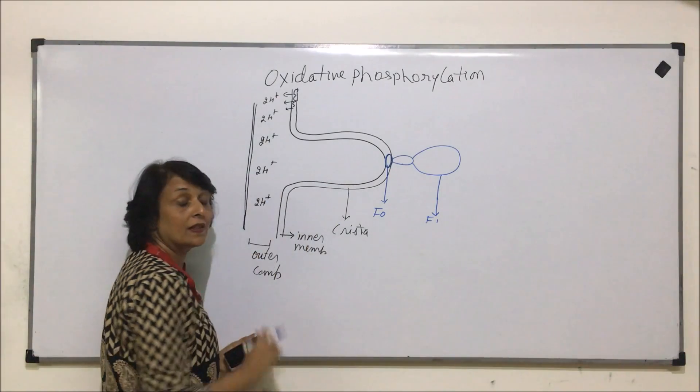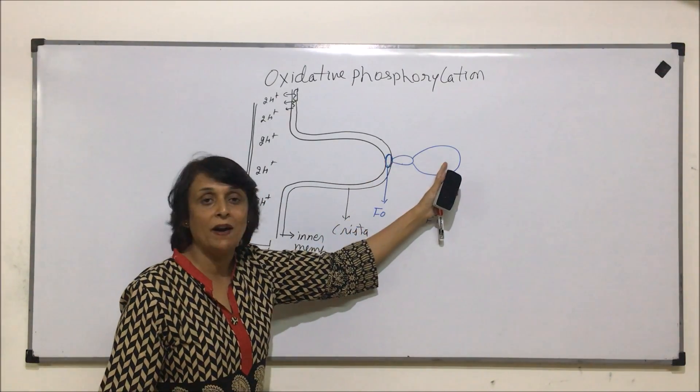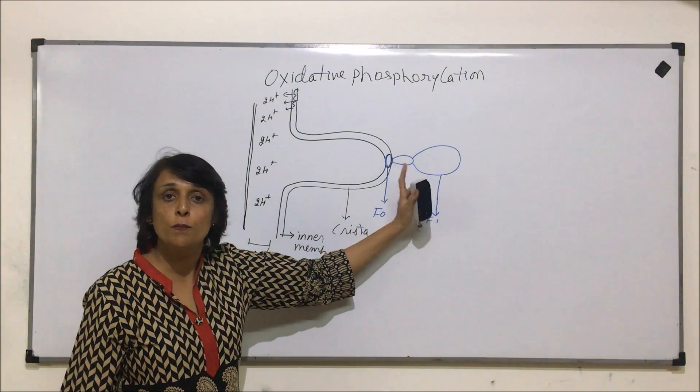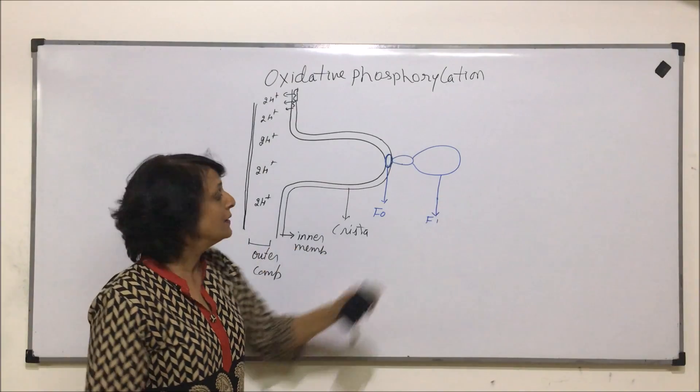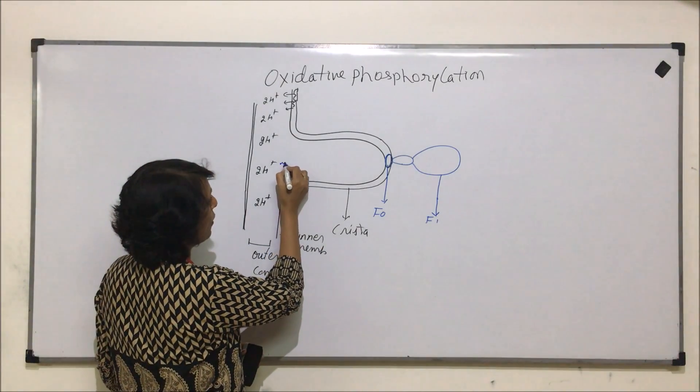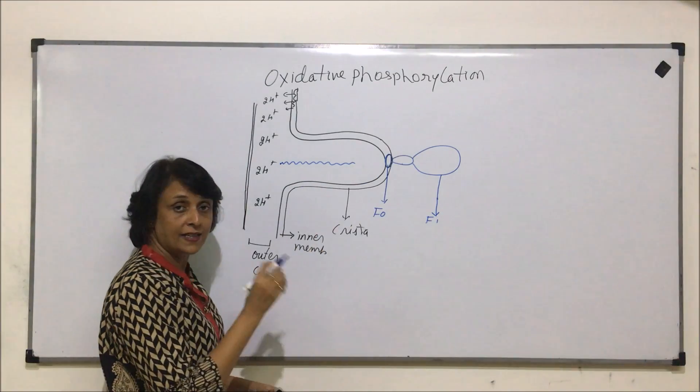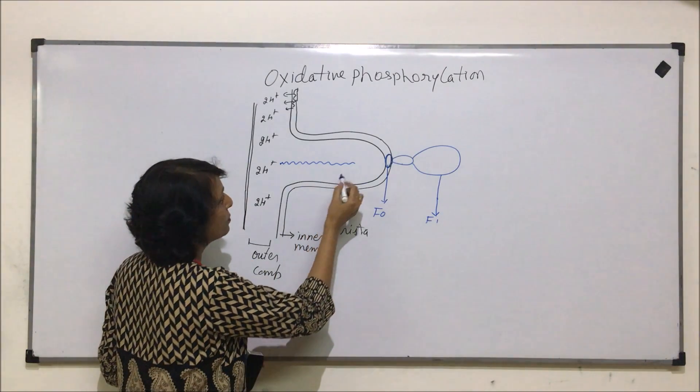So when this proton moves, it can move only through these particles. So these act as channels or gates for the entry of proton back into the matrix. When this proton goes, we are showing a wavy line which represents that there is some energy which is possessed by the proton.